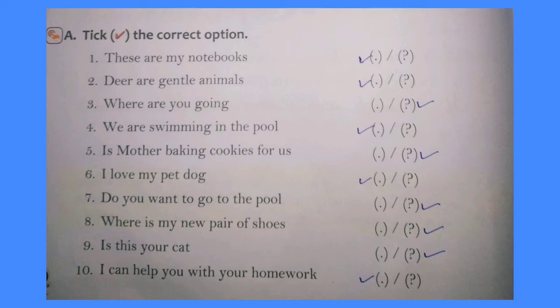Let's see the exercise in your book. Tick the correct option. 'These are my notebooks.' — statement, so we use full stop. 'Deer are gentle animals.' — statement, full stop. 'Where are you going?' — question, so question mark. 'We are swimming in the pool.' — statement, full stop. 'Is mother baking cookies for us?' — question, question mark. 'I love my pet dog.' — statement, full stop.